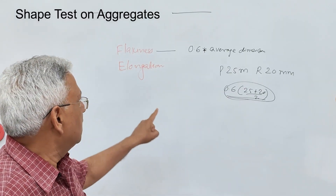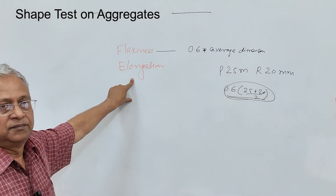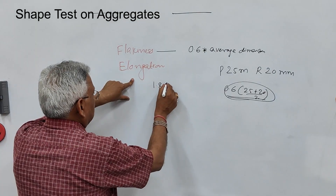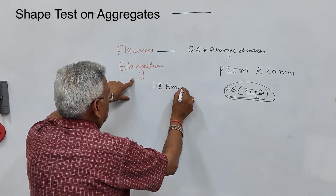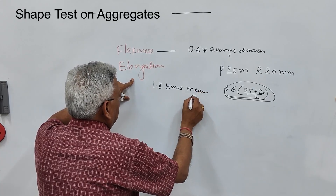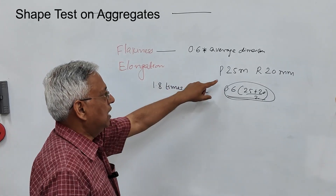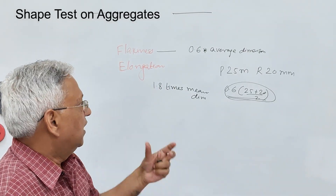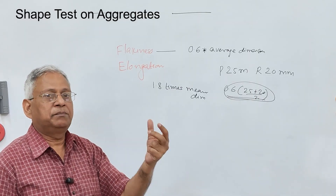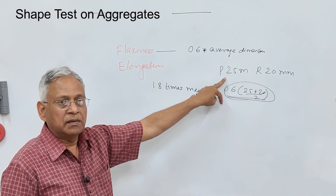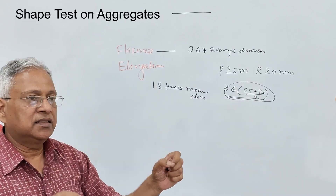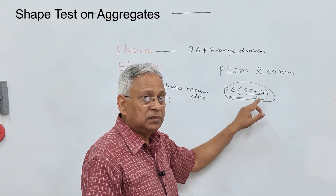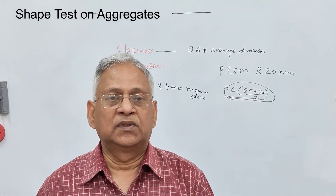Similarly, elongated particles are those whose maximum dimension (length) exceeds 1.8 times the mean dimension. In the same example, if you have aggregate passing 25 mm and retained on 20 mm, and a particle's length is more than 1.8 times (25+20)/2, then it is an elongated particle.